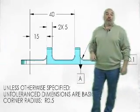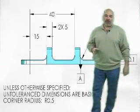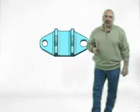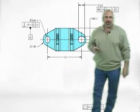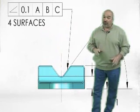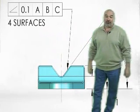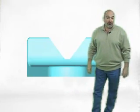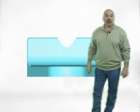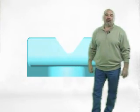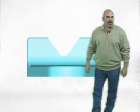A common error on a drawing is to apply only angularity to features and believe the location is controlled. Position locates features of size. Profile of a surface is the only geometric tolerance that locates surfaces. The orientation tolerances of perpendicularity, parallelism, and angularity never locate features. The angled surfaces on this part need to be located relative to the datum reference frame. If angularity had been applied, the drawing would be incomplete.